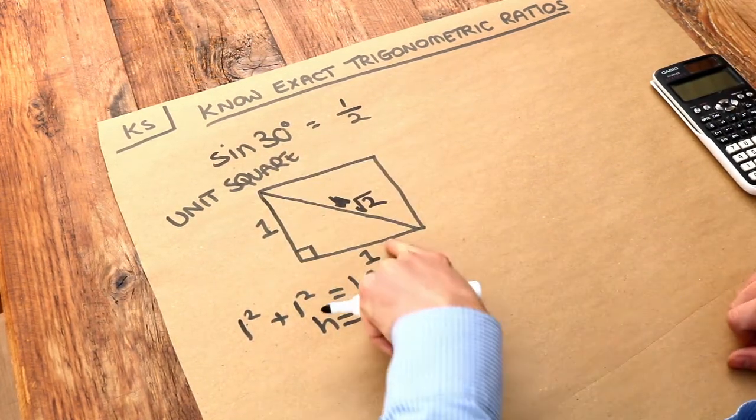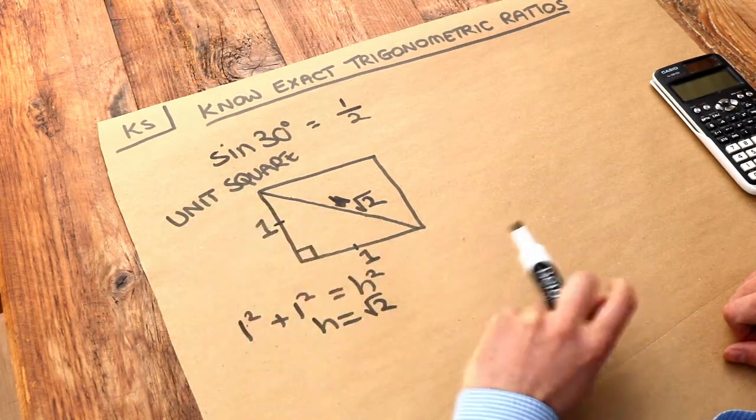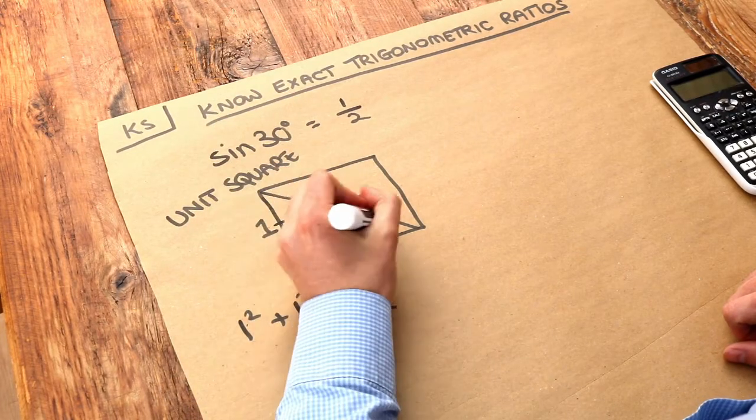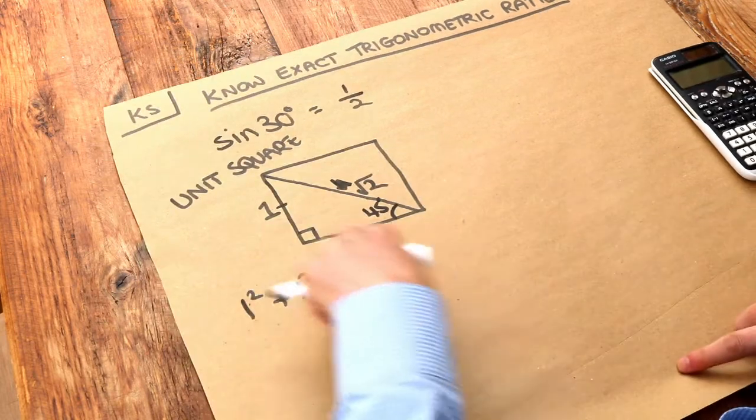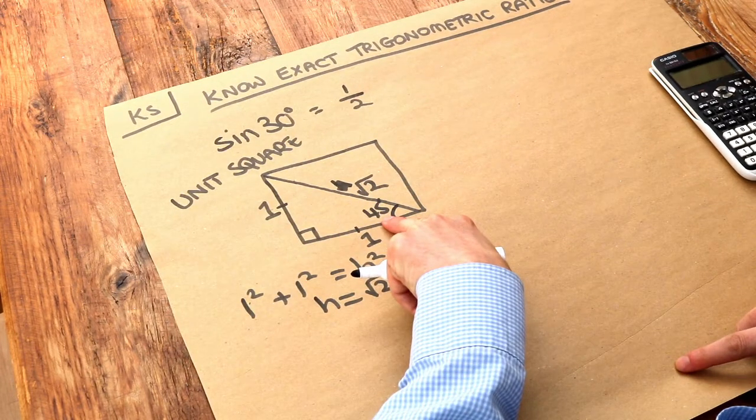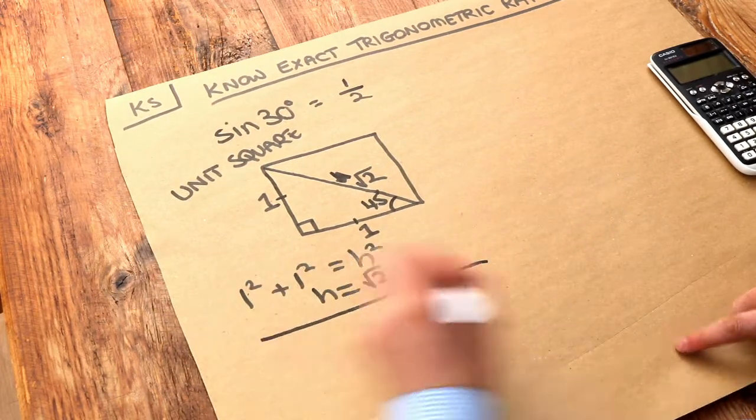And what are the angles in this triangle? Well if that's 90 degrees, and this is an isosceles triangle, then these must each be 45 degrees. Now if we've got these lengths and this 45 degree angle, we can find out what sine of 45, cos of 45, and tan of 45 is.